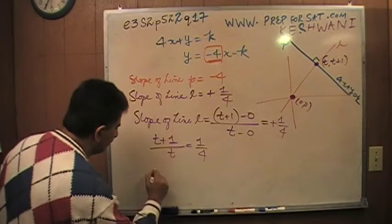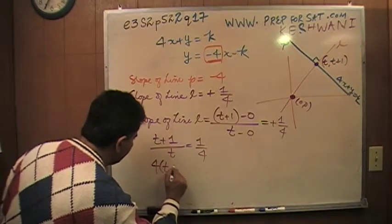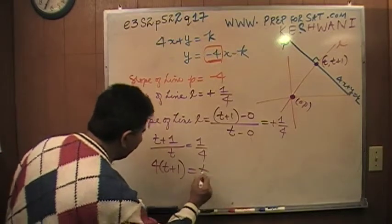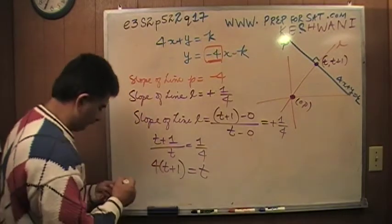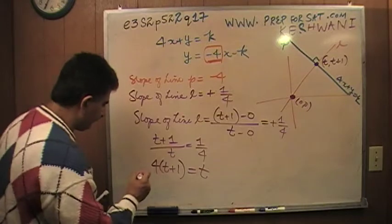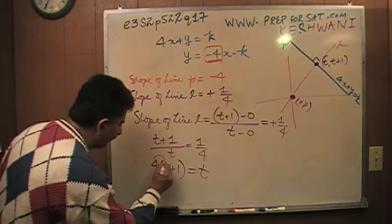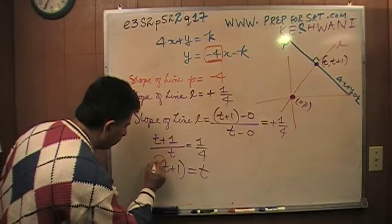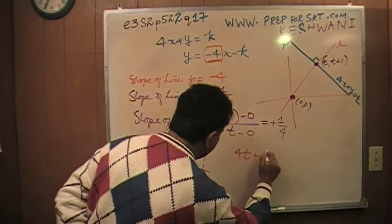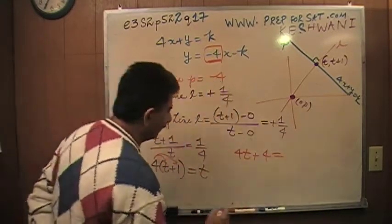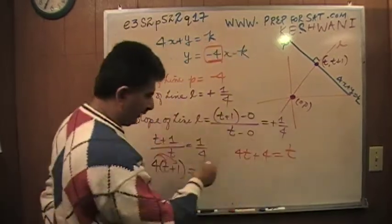So what this boils down to is T plus one over T equals one-fourth. I'm going to cross-multiply. When you cross-multiply, you get four times T plus one equals T. Let's open the parenthesis. So I get four T and four. So four T plus four equals T.